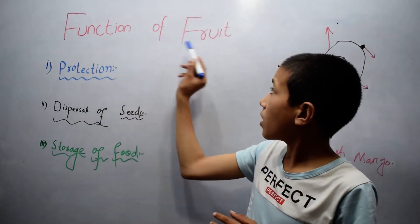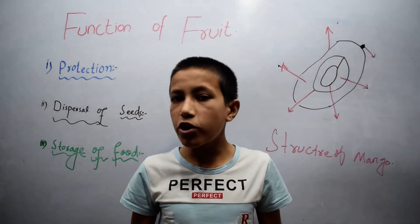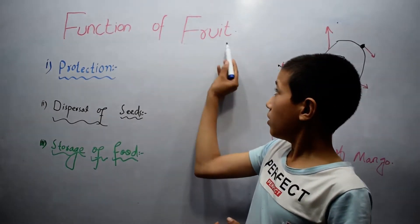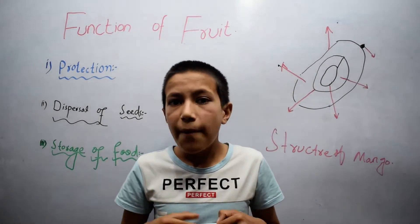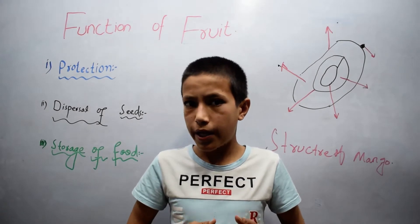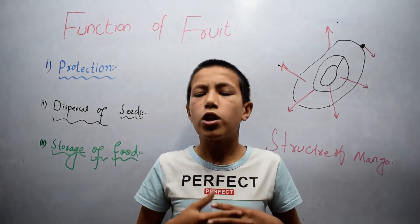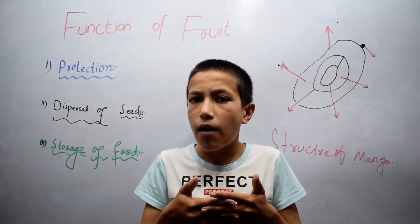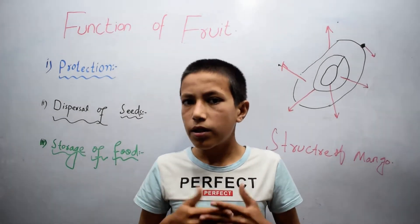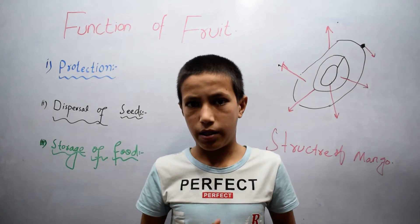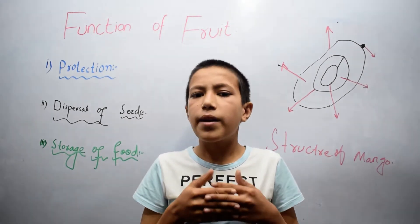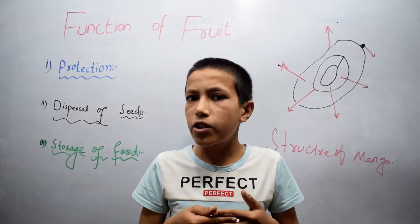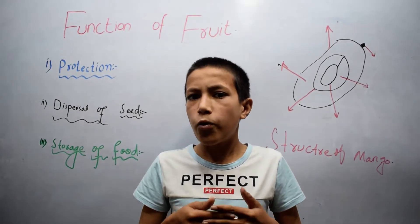Let's talk about the function of fruit. Before discussing the function of fruit, let's discuss fruit itself. After pollination and fertilization, the ovary grows into a fruit. The fruit consists of two parts: the pericarp and the seed. The pericarp develops from the wall of the ovary, while the seed develops from the ovules.